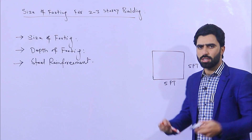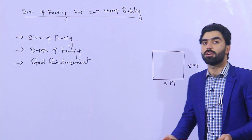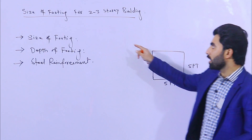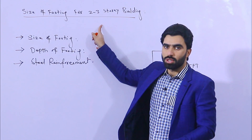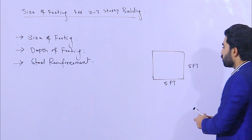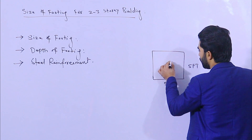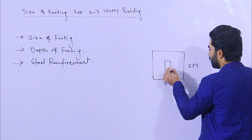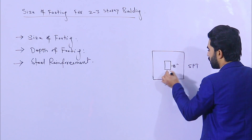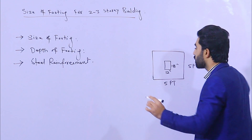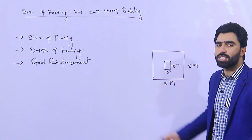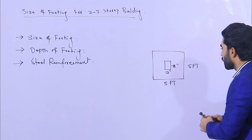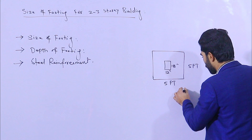Many students also ask what should be the size of the column. For three stories especially, the size of the column should not be less than 12 by 18 inches. I will guide you for column steel reinforcement in the next video. So this is the size of footing — now let's come to its depth.